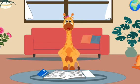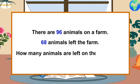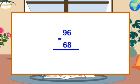Oh, great! The last question is that there are 96 animals on a farm. 68 animals left the farm. How many animals are left on the farm now? 96 minus 68 is equal to what?